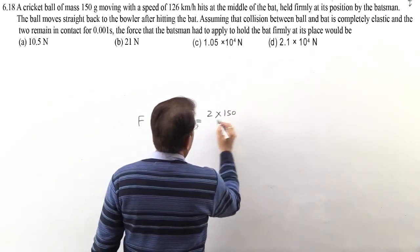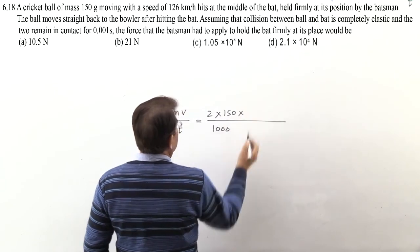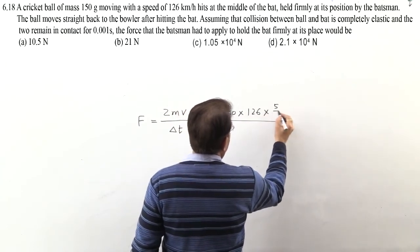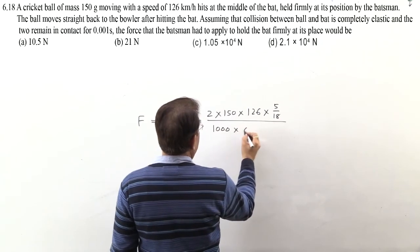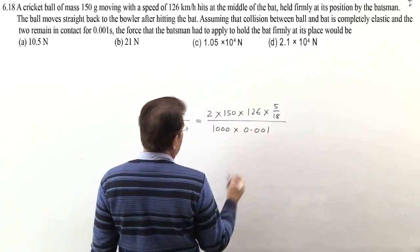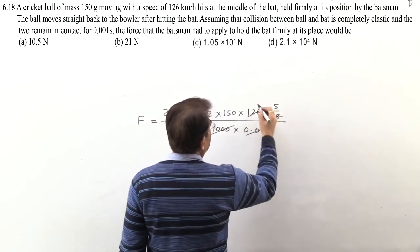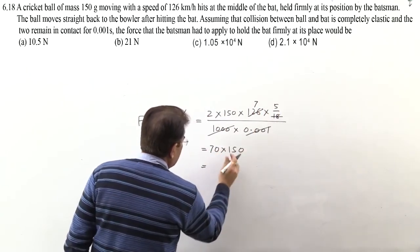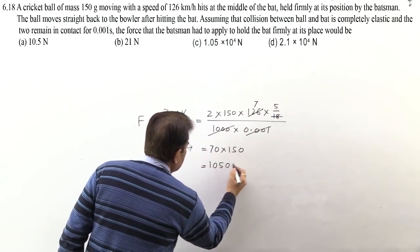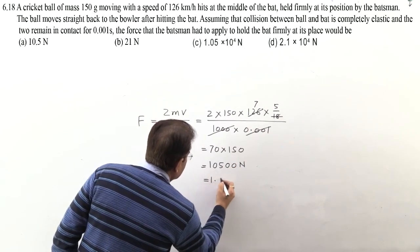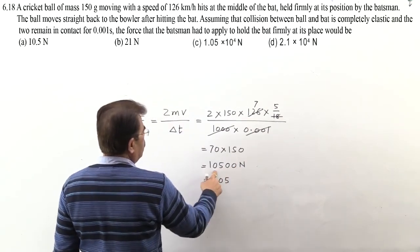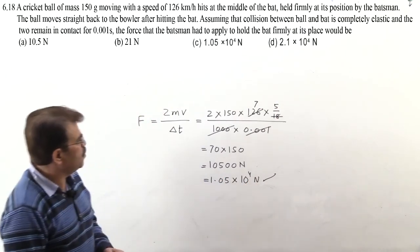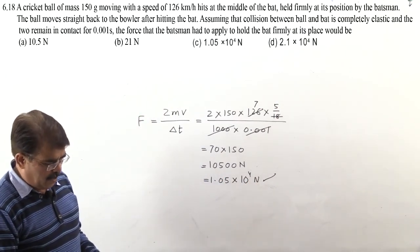We divide by delta t, so we get force. Newton's second law I have written: change in momentum upon change in time, the time interval. Just here substitute value and solve it. Mass given is 150 gram, it will be kilogram, divide by 1000, into velocity. Speed given is 126 km per hour, so 126 times 5 by 18, and below the time interval which is 0.001. So you get answer in newton. 1000 will cancel, and this will cancel 7 times. So 35 into 2 is 70 into 150. Solving: 15 and 105 and 2 zeros. So that is newton. If you want, you can write 1.05, here is decimal point, we left 4 places. So this will be the answer: 1.05 times 10 raised to the power 4 newton. 6.18 answer will be C.